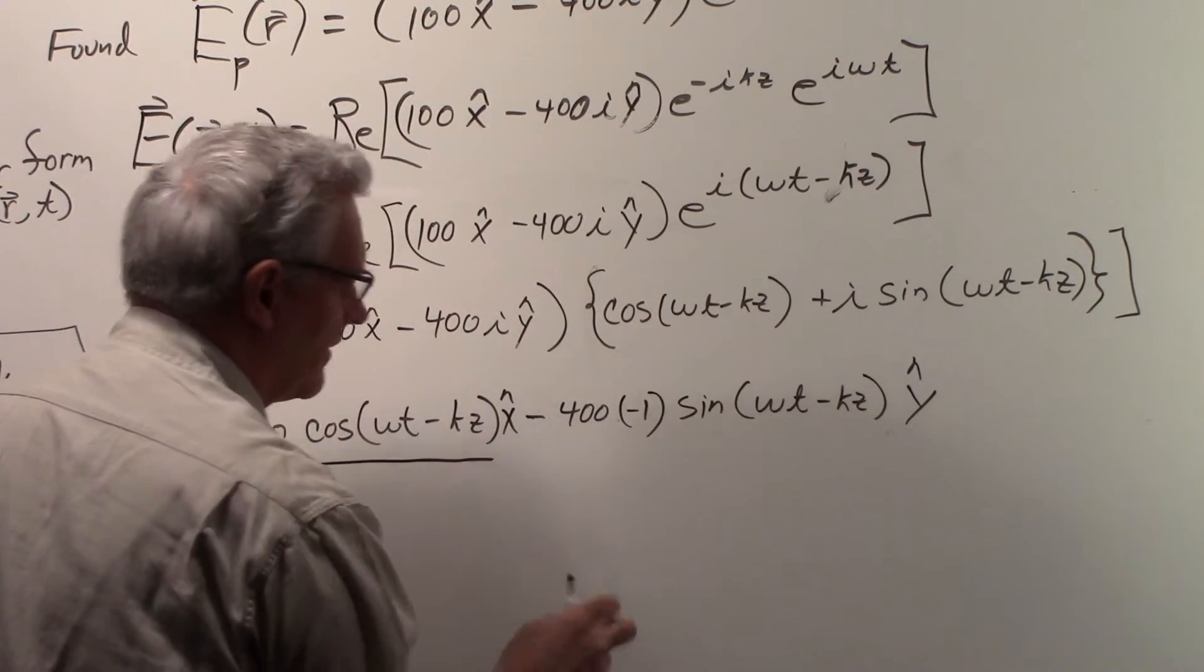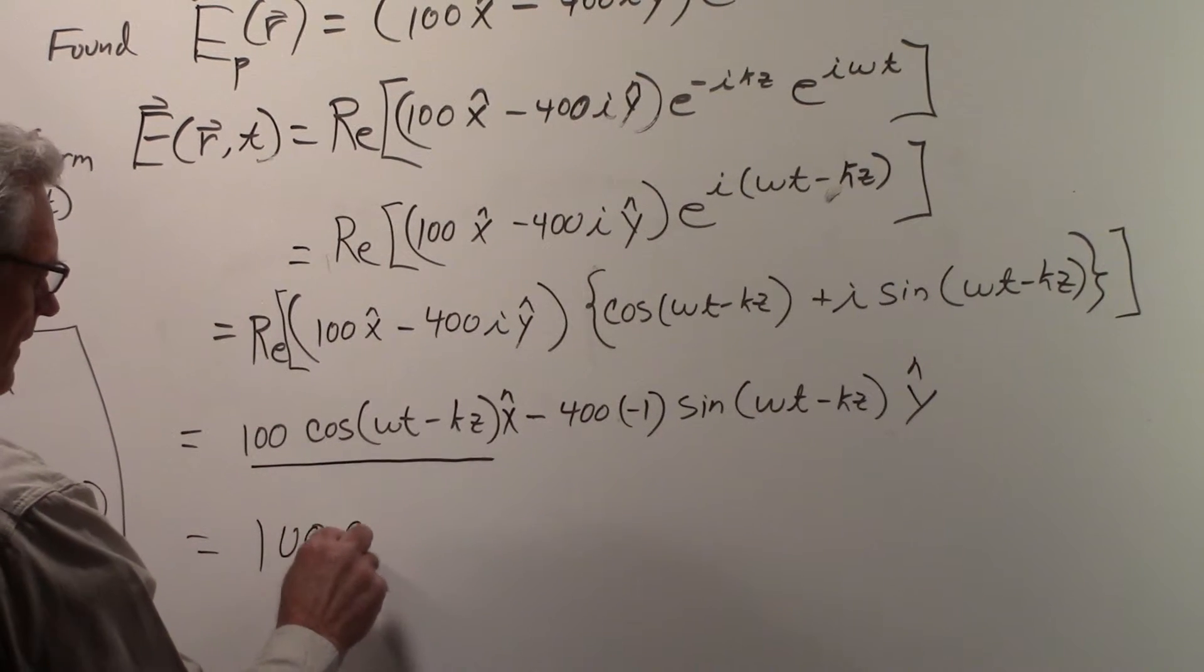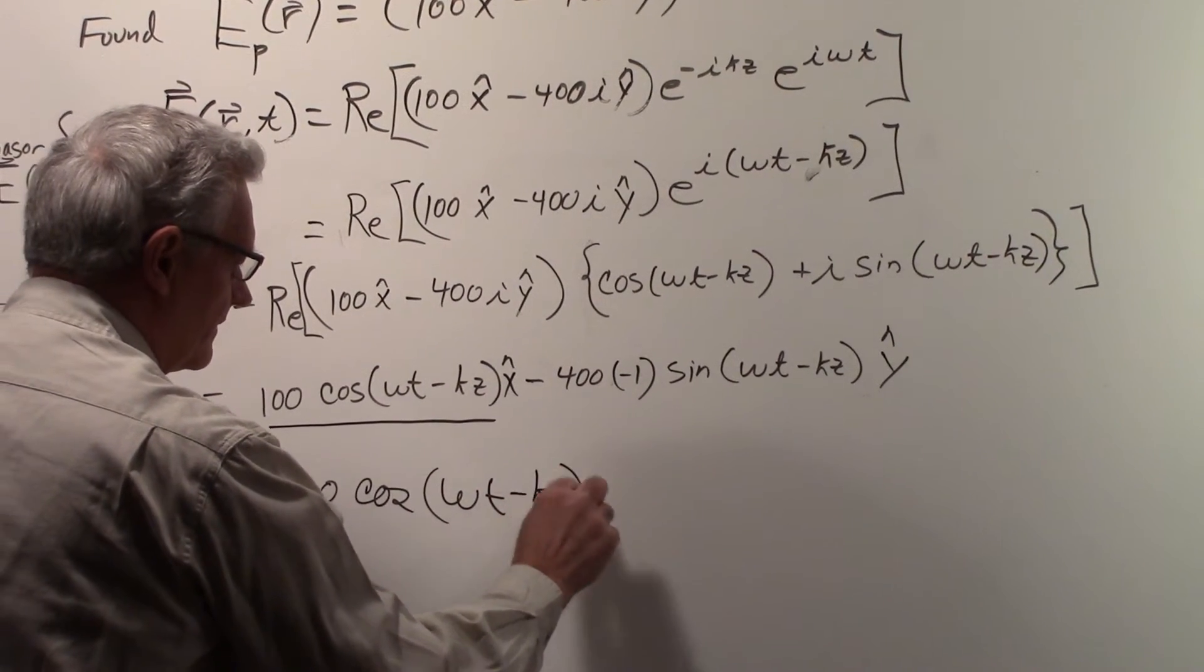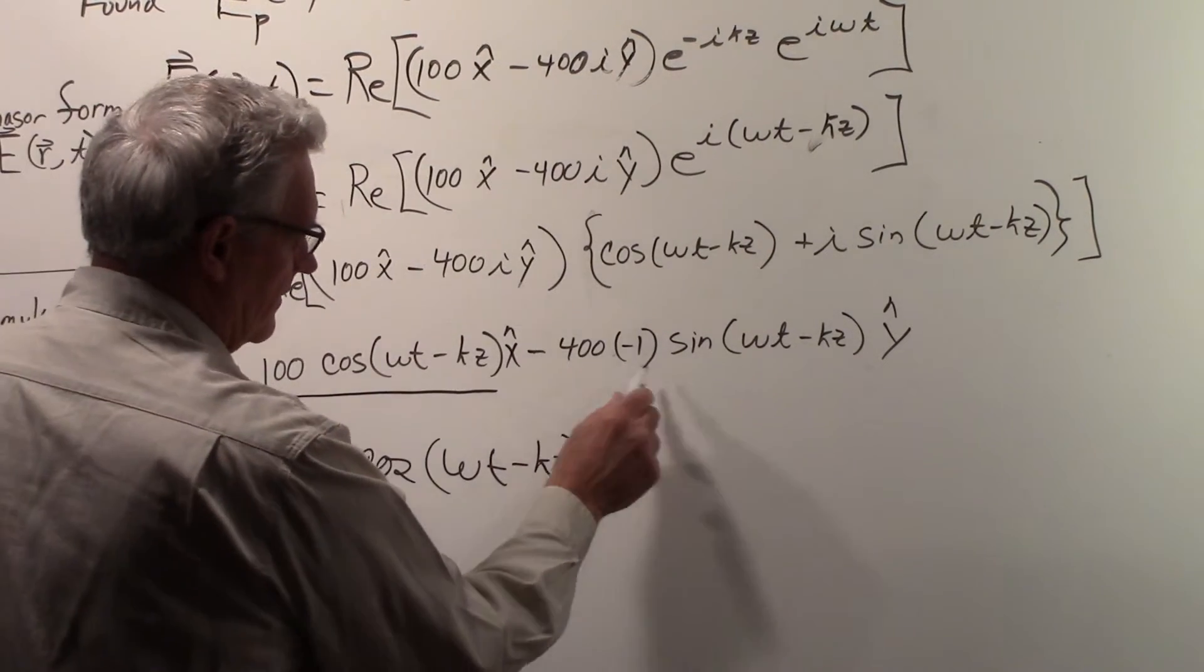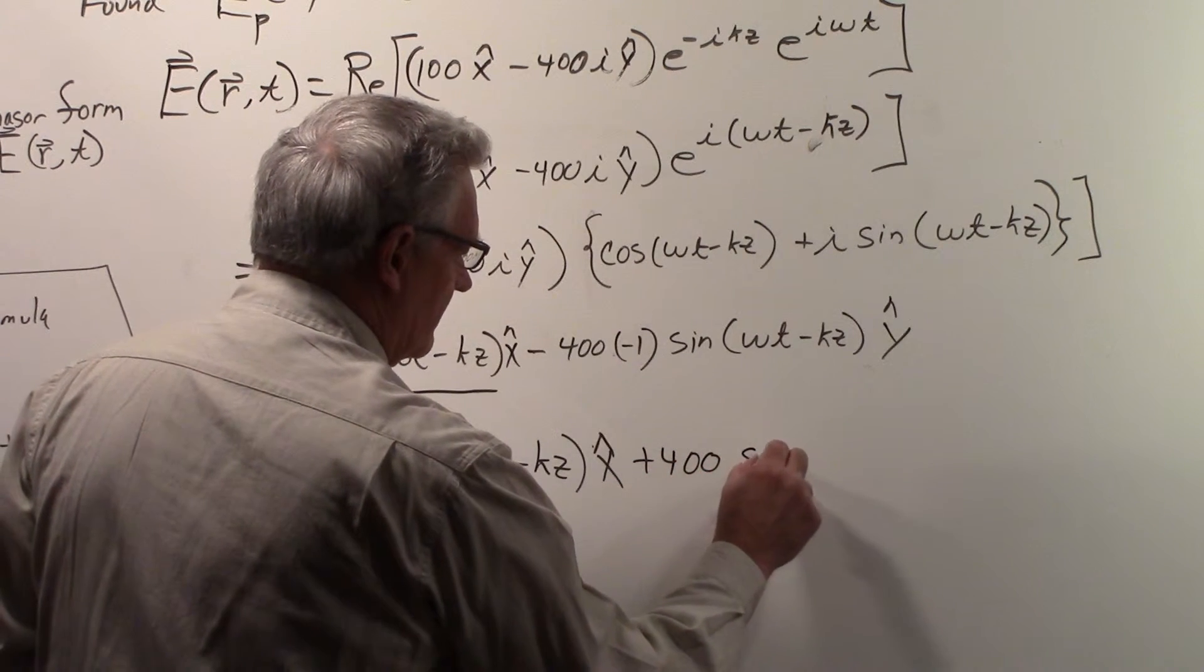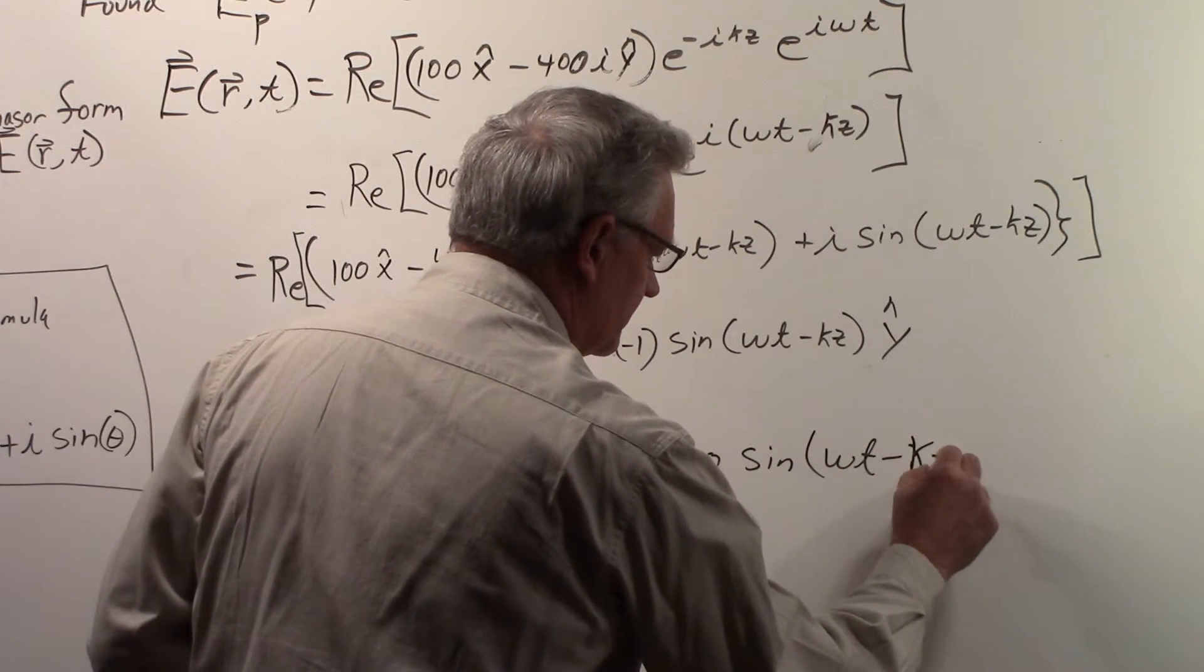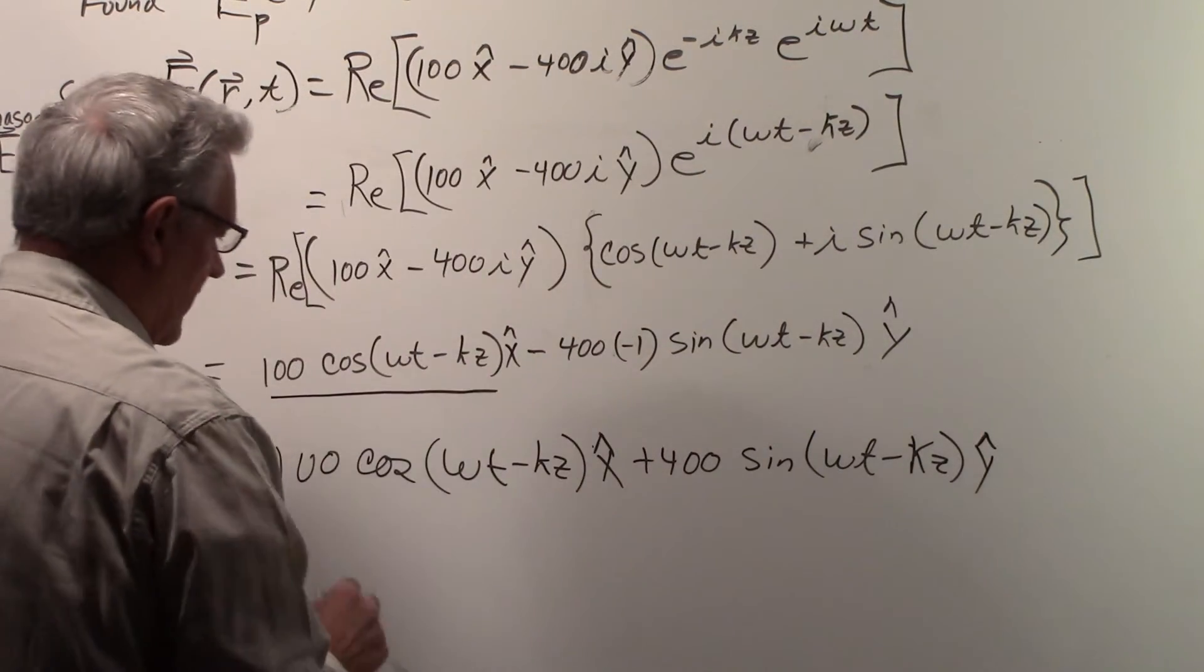So you can see that we wind up with the 100·cos(ωt - kz) x component, and then just multiplying the minus one times the minus, we'll get +400 times the sin(ωt - kz) y component. And if you take a look at this, it's precisely that.